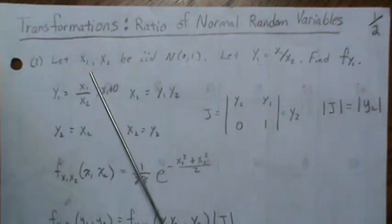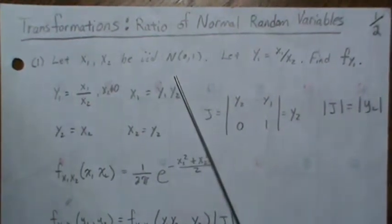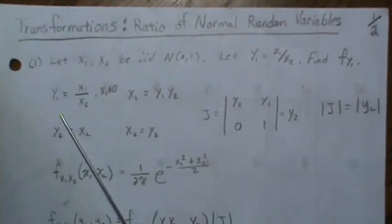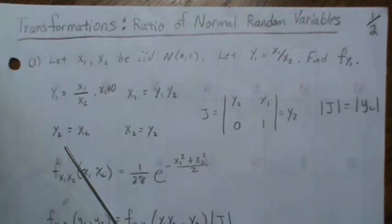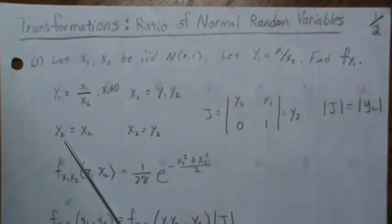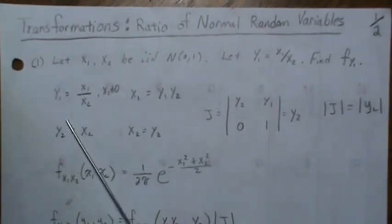Since we're going from R2 space, we're going to use a change of variable technique, so we need a map to R2 space. We need to pick another variable that's easy to integrate out, so we find the joint density of Y1 and Y2, and then integrate out Y2, which leaves Y1.